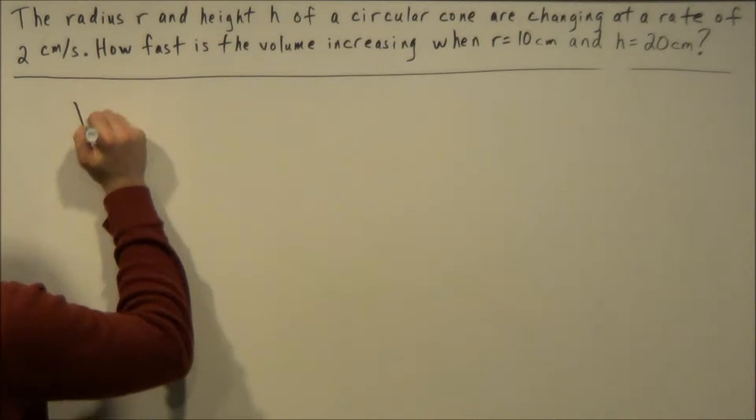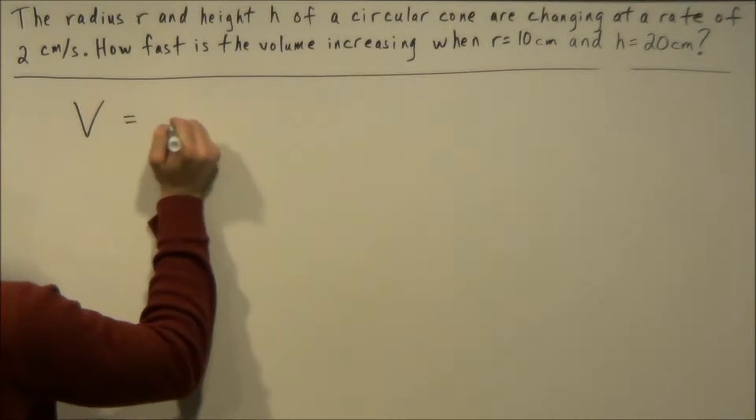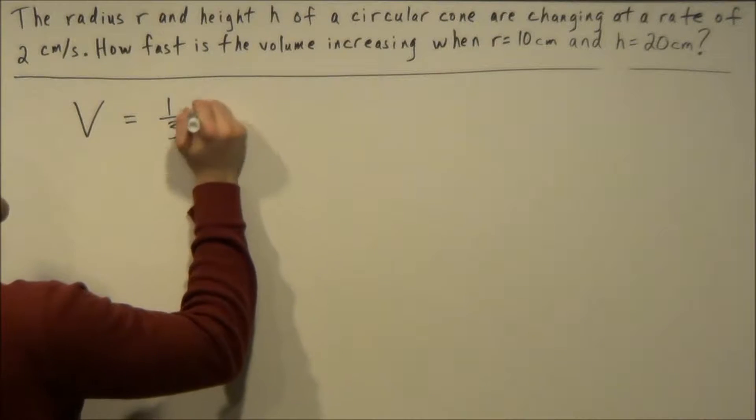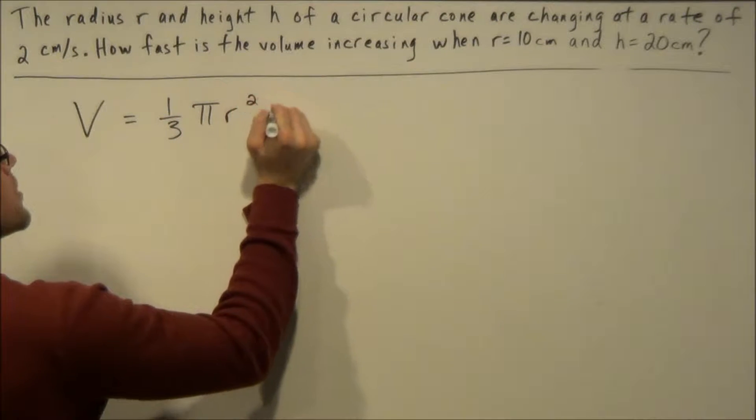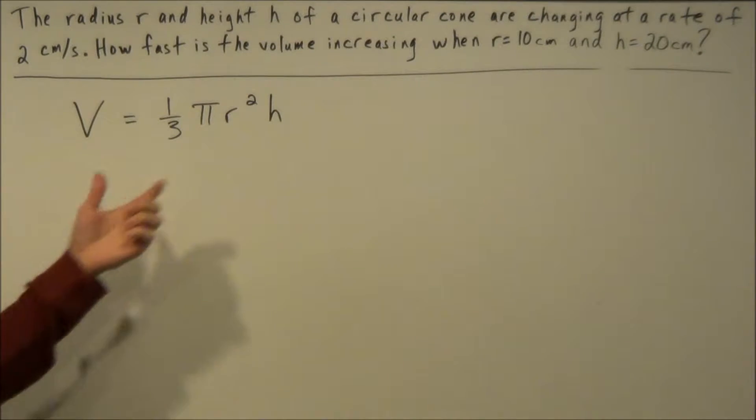So for this example we need the volume of the cone which is V equals one-third pi r squared h. Now for this example you have to be careful.